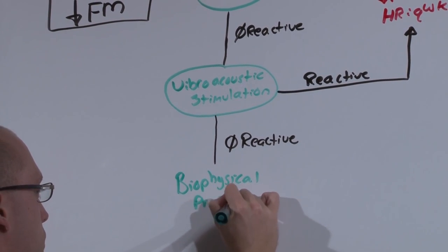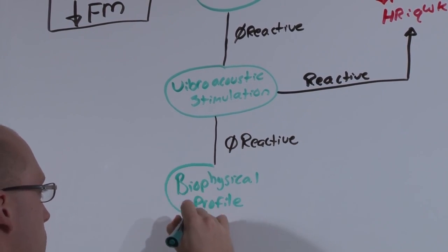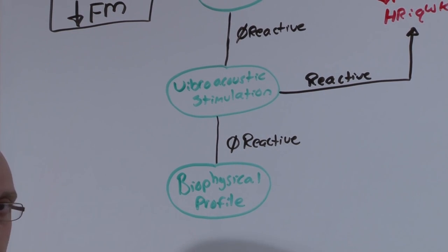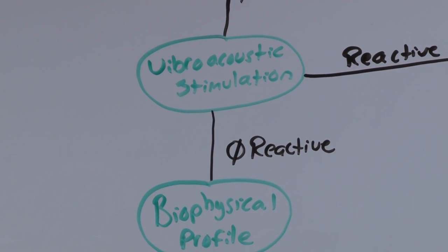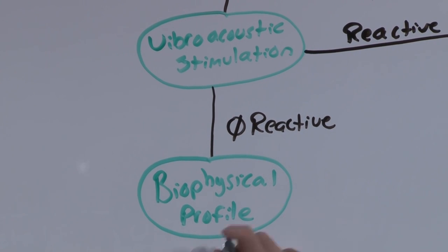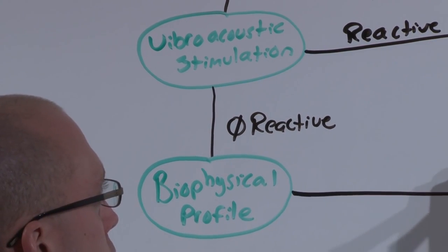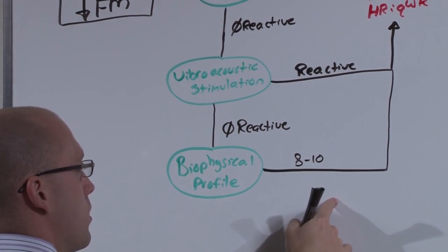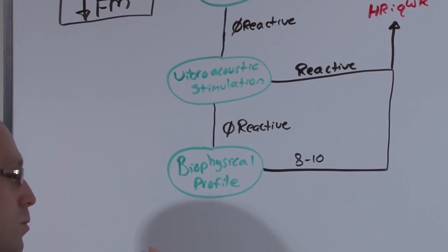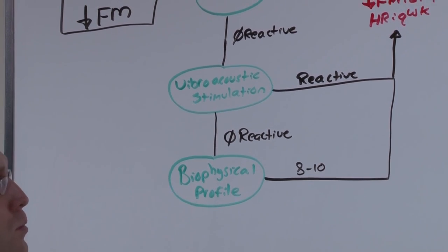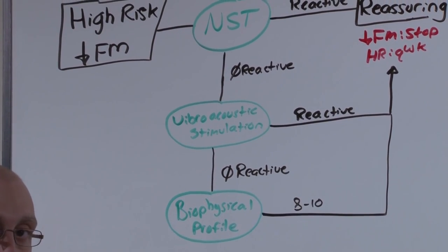The biophysical profile is sort of like an intrauterine APGAR score. It's ranked on a score of 0 to 10 based on the NST, some amniotic fluid findings, and what baby is doing in utero. If the biophysical profile is good — that is, a score of 8 to 10 — that's reassuring, and you can stop for decreased fetal movement or repeat weekly for high risk.